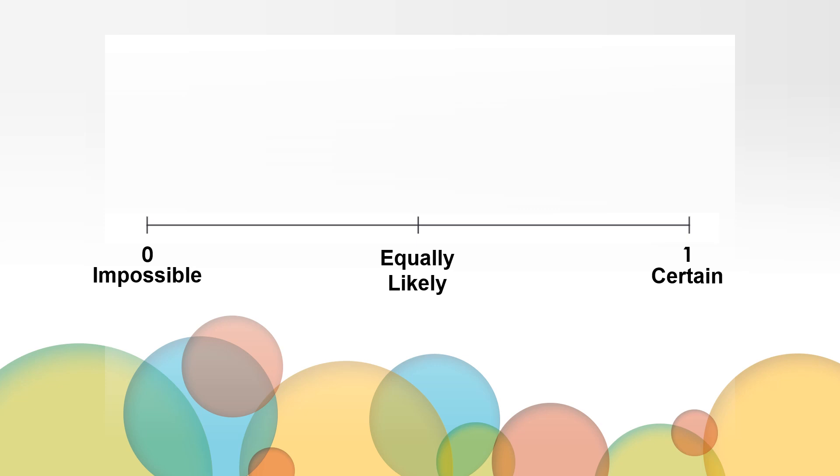Sometimes outcomes fall in between these numbers and are described as either unlikely or likely. When an event will probably happen, but it's not absolutely certain, we use the word likely. Likely events would be placed between equally likely and certain on the number line.